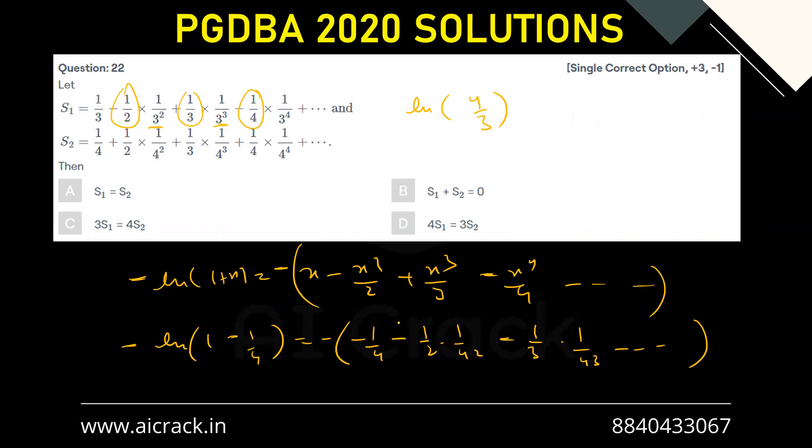So this was S1 and S2 equals to minus of ln(1 - 1/4), that is 3/4. Now this power goes over here, that becomes minus 1, so this becomes ln(4/3) only. So S1 and S2 are actually the same.